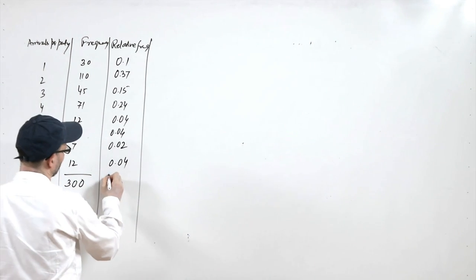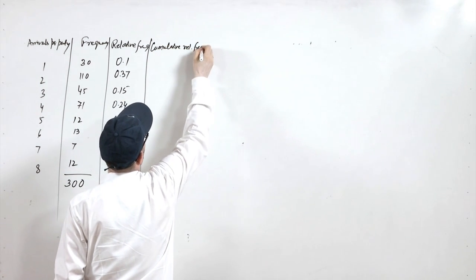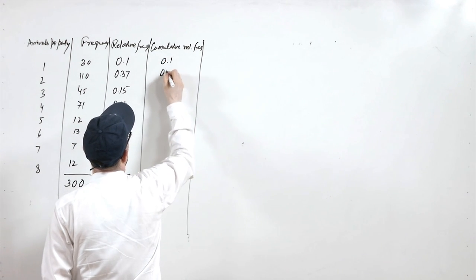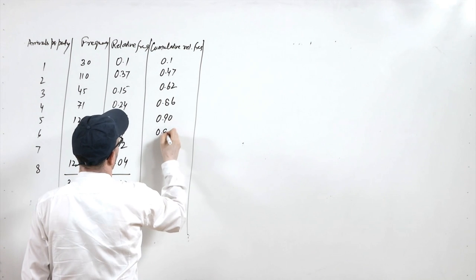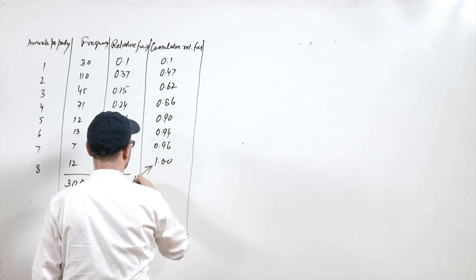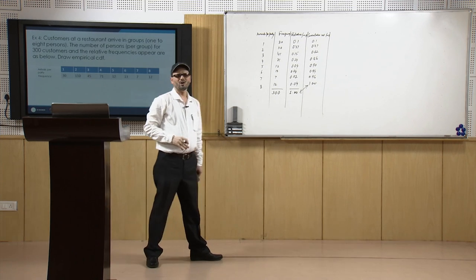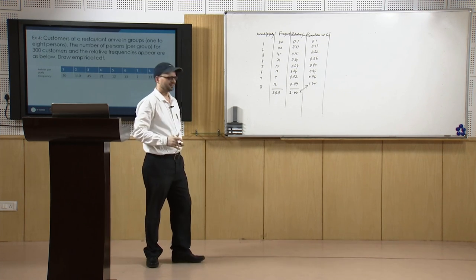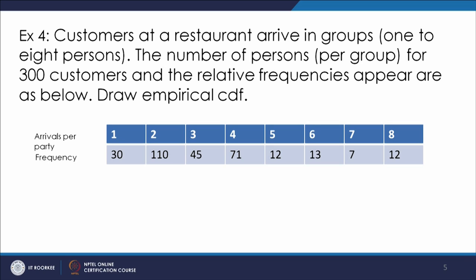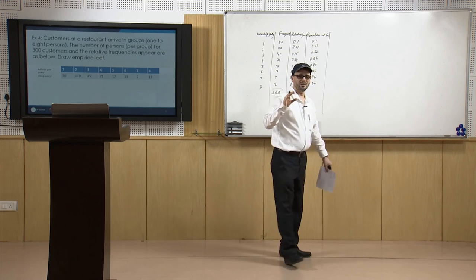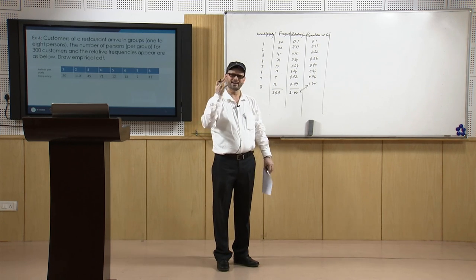All together the relative frequencies sum to 1. The cumulative relative frequency can then be computed: 0.10, 0.47, 0.62, 0.86, 0.90, 0.94, 0.96, and 1.0. This is how the cumulative distribution function cumulative relative frequency can be calculated. Based on that, we find the histogram.